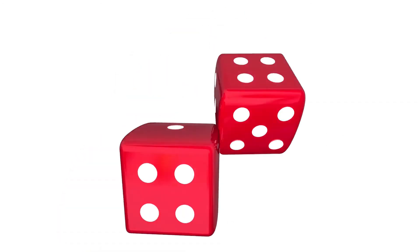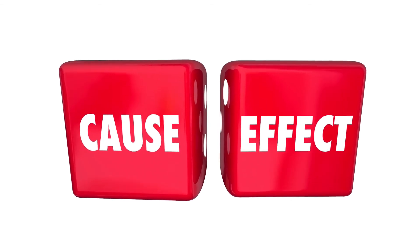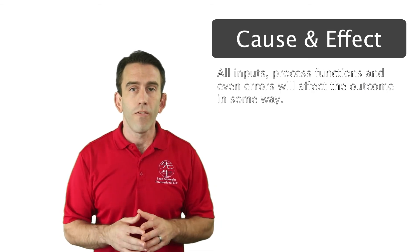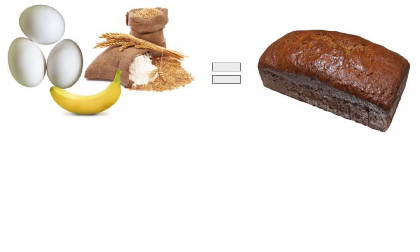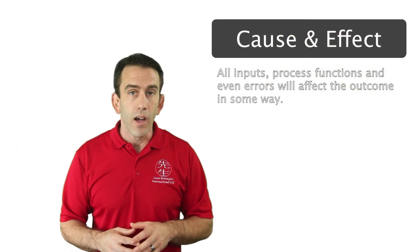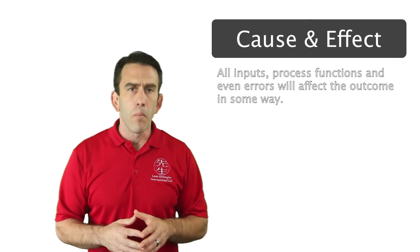This same concept runs through the cause and effect philosophy, which tells us that all inputs, process functions, and even errors will affect the outcome in some way. For example, we can see that if we change our inputs or the process used to make our banana bread, we will end up with a different outcome. This is not always bad, simply different. This introduces us to the basic concept of cause and effect.